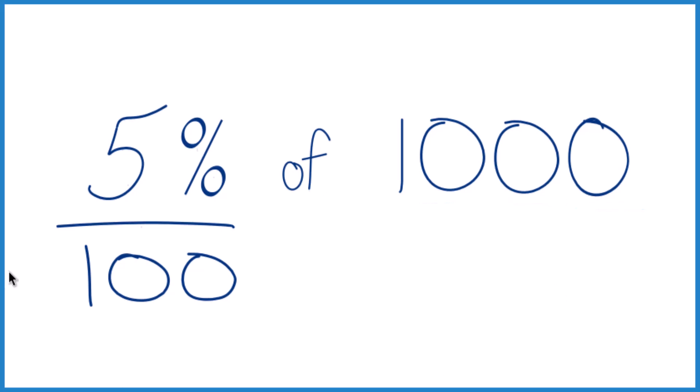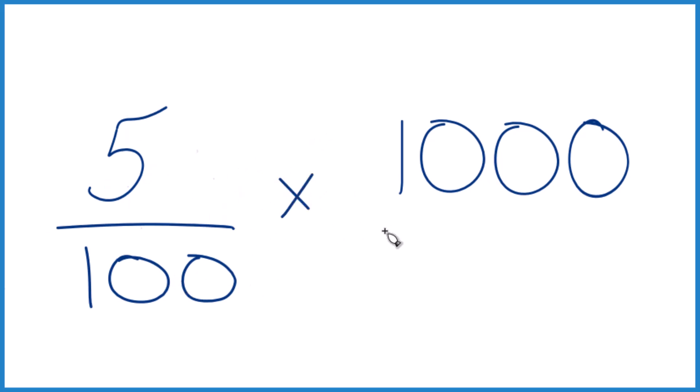Let's try another way. So 5% means 5 per 100. And of, we're just going to say that of means multiplication. So let's call this 1,000 over 1, still 1,000, but everything lines up.